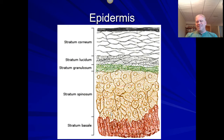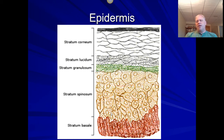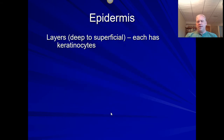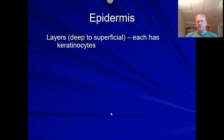Let's jump into the epidermis itself. You're going to have to tell me the different layers: stratum basale, spinosum, granulosum, lucidum, and then corneum — going from the bottom to the top, with the most superficial at the top. Going from deep to superficial, it's important to realize that in the epidermis, every single layer has specialized cells called keratinocytes. Keratin is a waterproofing protein, and those cells will make that protein at every single layer. Make sure we understand which layers keratinocytes live in — they're found in every layer.